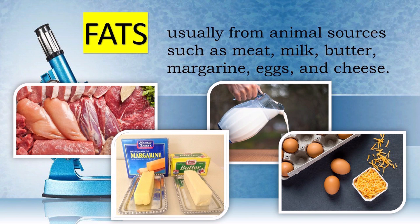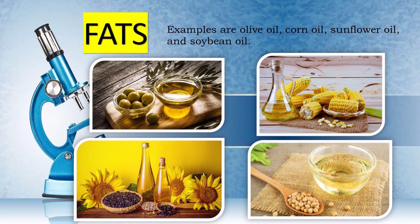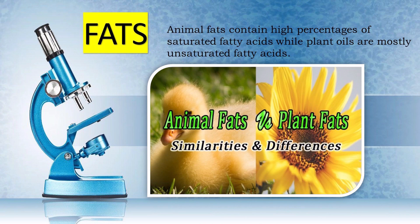Fats usually come from animal sources, such as meat, milk, butter, margarine, itlog, at saka yung keso or cheese. Meron naman iba — yung tinatawag nating oil, refers to a liquid triglyceride, coming from plant sources. So other than that, we also have olive oil, corn oil, sunflower oil, and soybean oil. Itong mga ito, pwede natin silang i-consider na tinatawag nating saturated fats. So ito yung mga example din ng mga saturated fats natin.